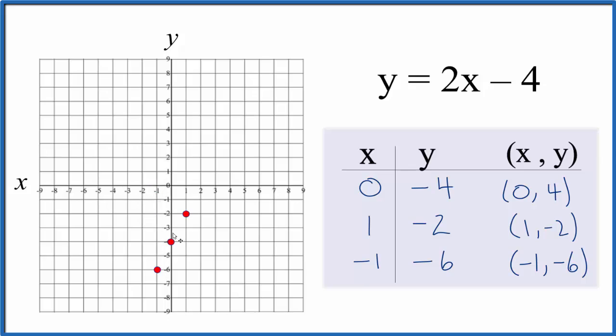We could have used two points, but if you use 3, you made a mistake it's easy to spot. So this looks pretty good. Let's put a line over it. Then we could put arrows here to show it goes to infinity.